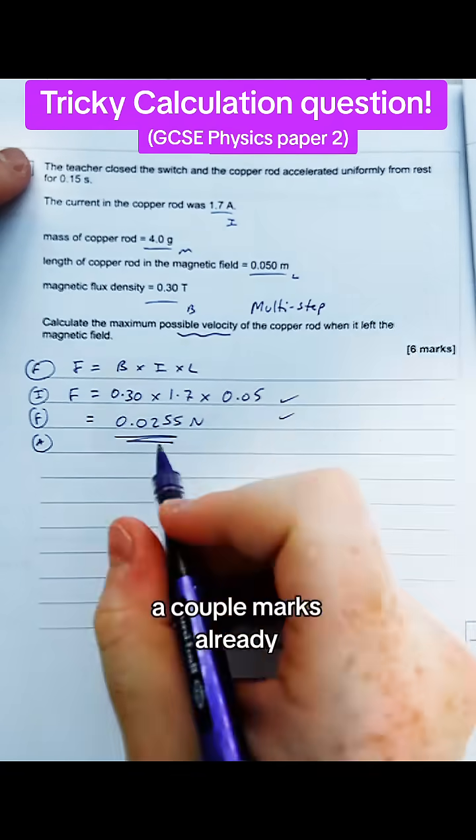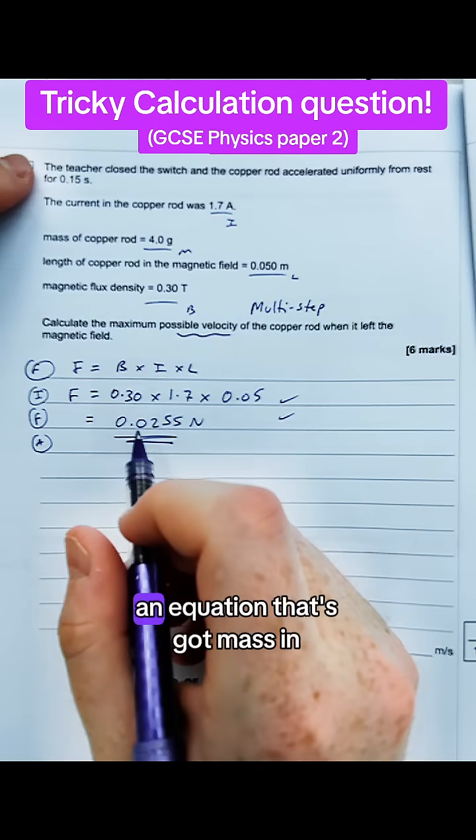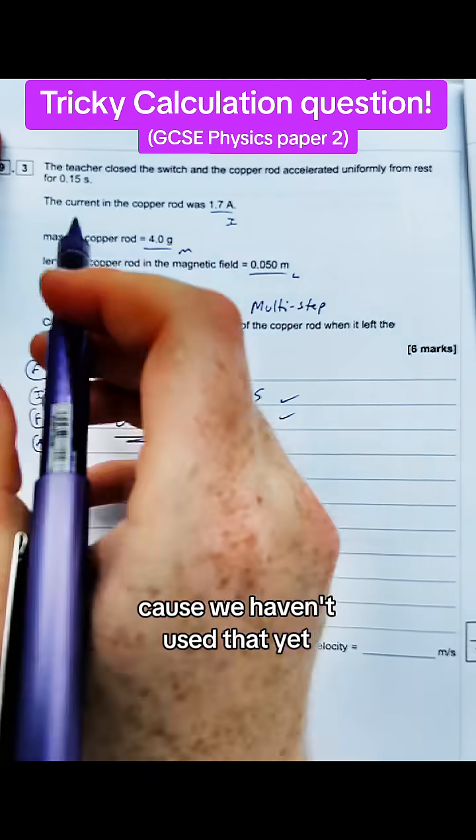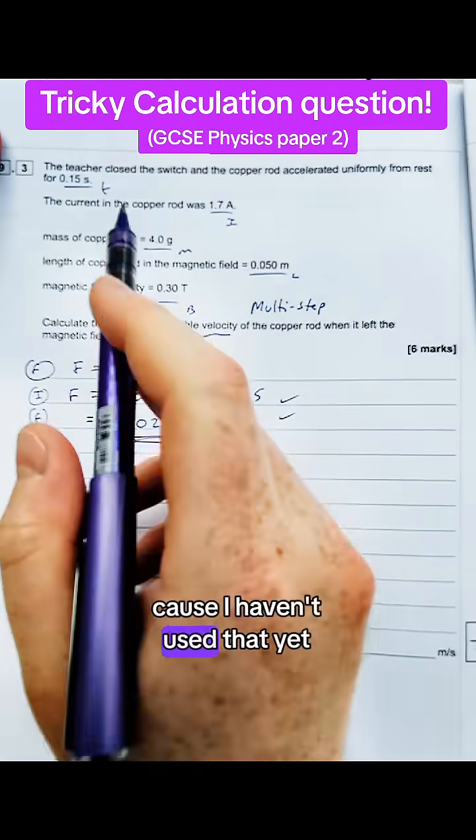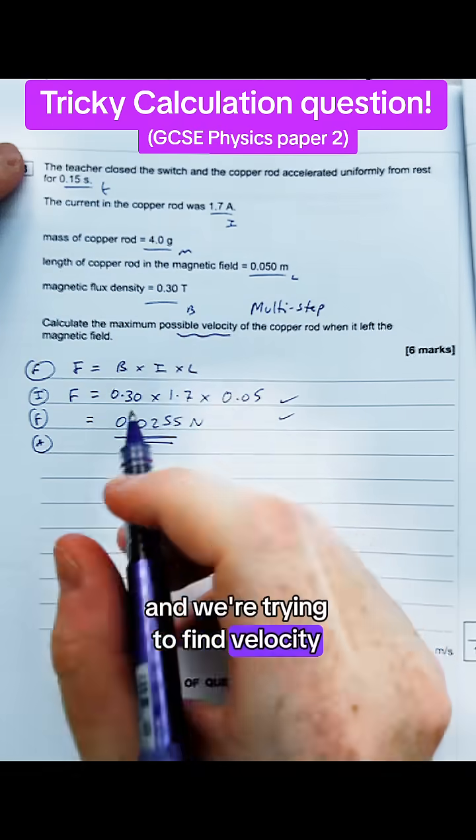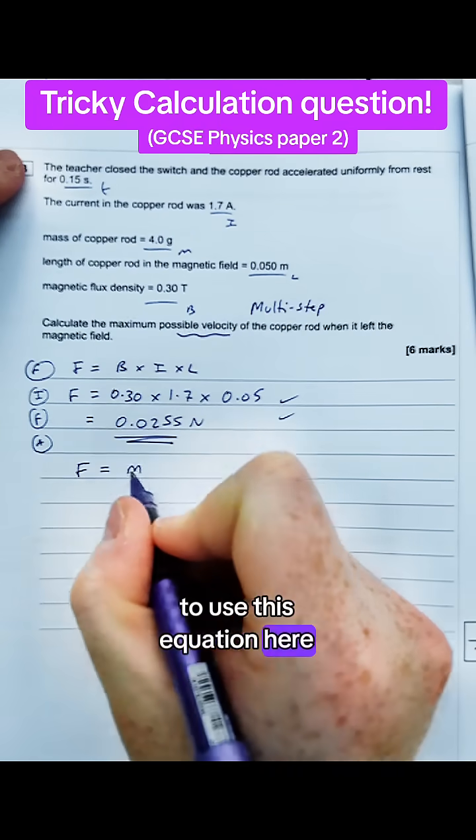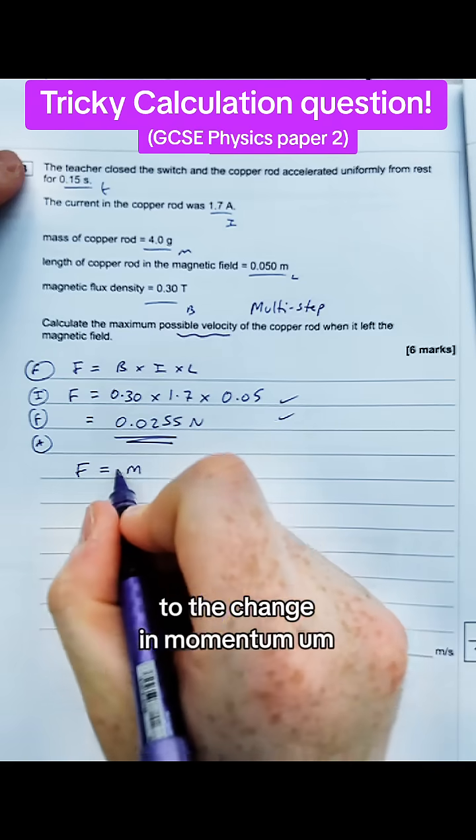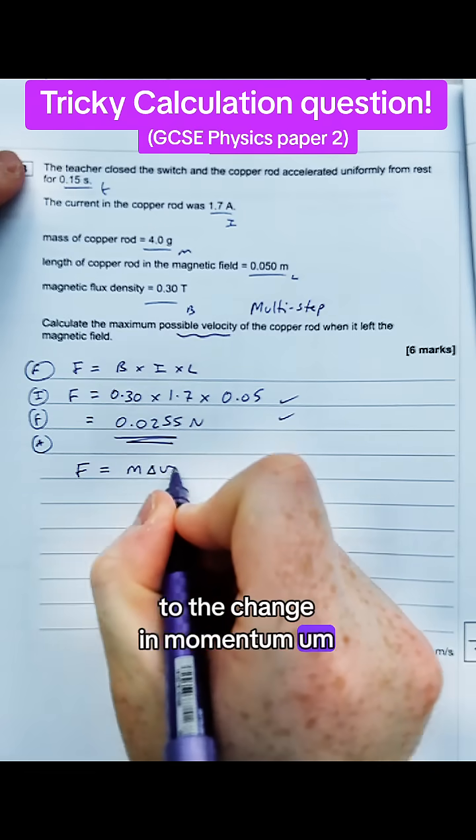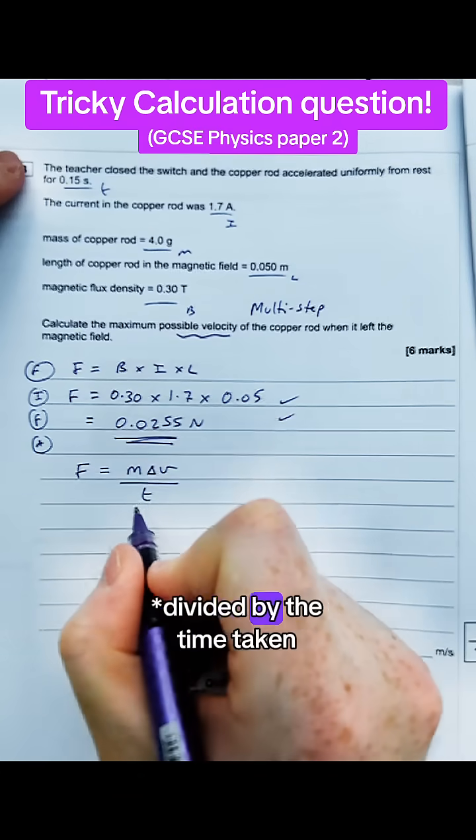Now we've got that, we've got a couple of marks already. Let's see if we can find an equation that's got mass in it because we haven't used that yet, and we've also got time up here because we haven't used that yet, and we're trying to find velocity. There's a couple of ways of doing this. I think the simplest way is to use this equation here, which is that force is equal to the change in momentum divided by the time taken.